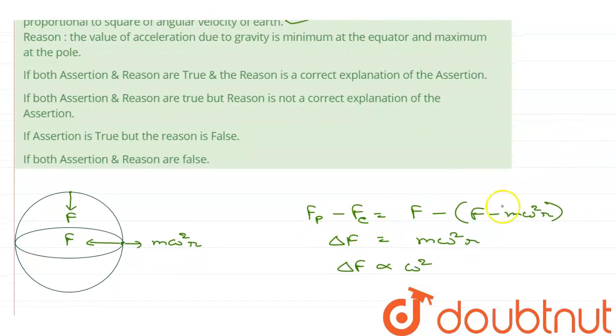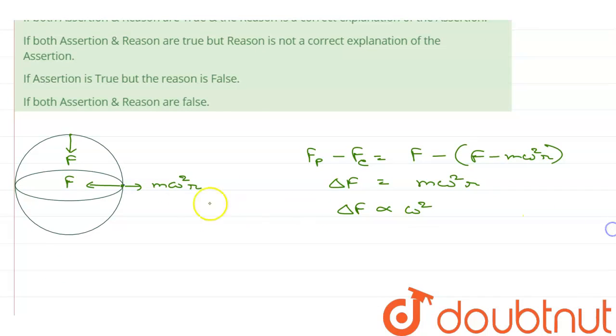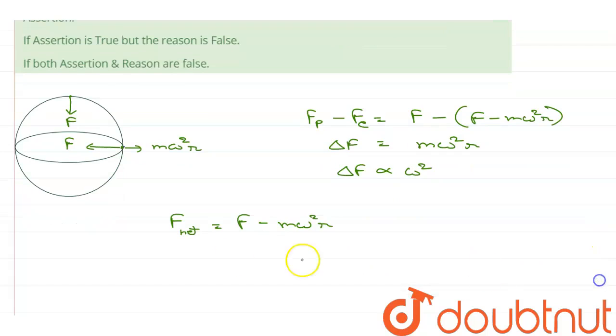So, as we just proved, at the equator, the net force that is acting f net will be equal to f minus m omega square r. This is equator.